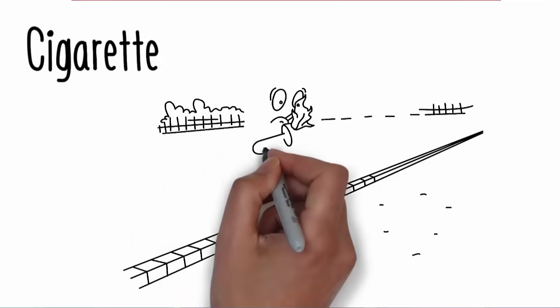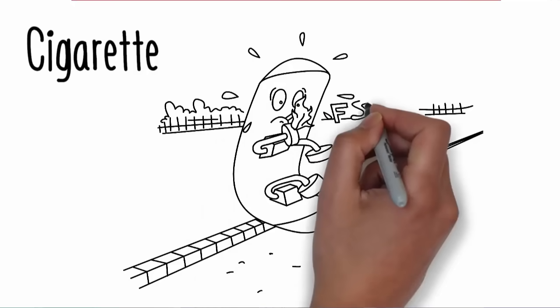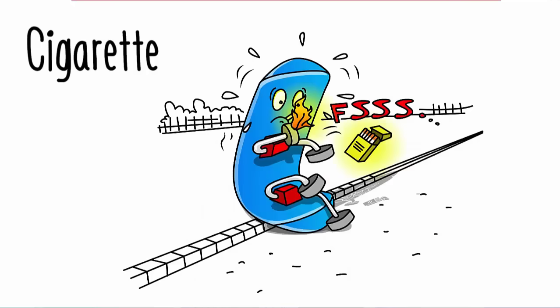Cigarette. The skateboard begins coughing and it stops and uses one of its wheels to light a cigarette. The cigarette becomes engulfed in flames and the skateboard throws it away.